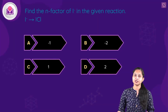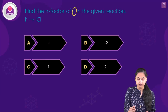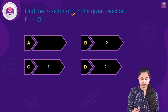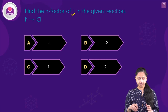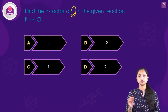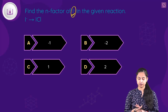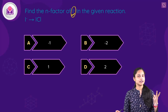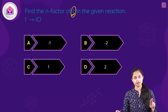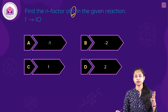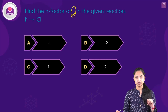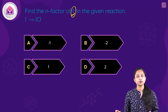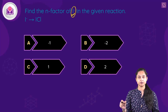The next question asks us to find the N-factor of I⁻ (iodide ion) in the given reaction where I⁻ is transformed into ICl. There are a few steps to follow: first, calculate the oxidation state of the atom on the reactant side; second, calculate the oxidation state on the product side; third, find the difference in magnitude of the two oxidation states; and fourth, multiply that difference by the number of atoms for which the valence factor has to be calculated.